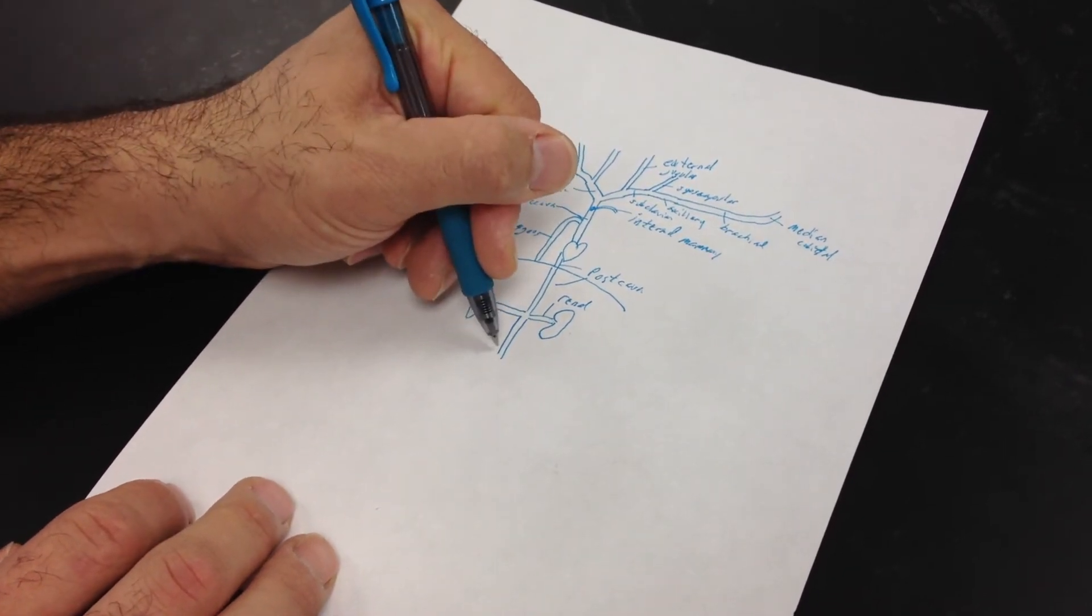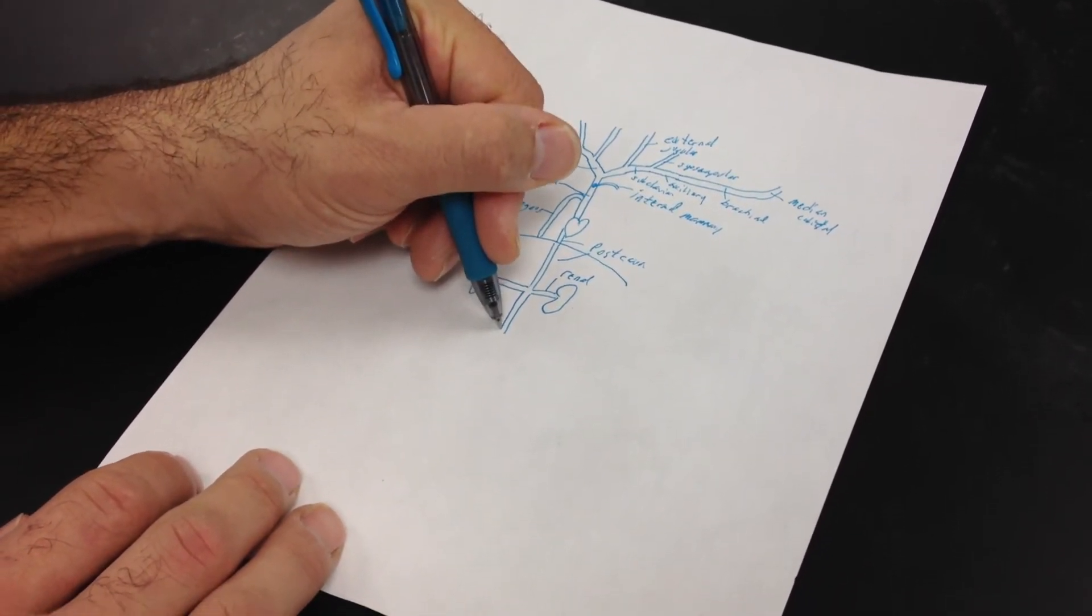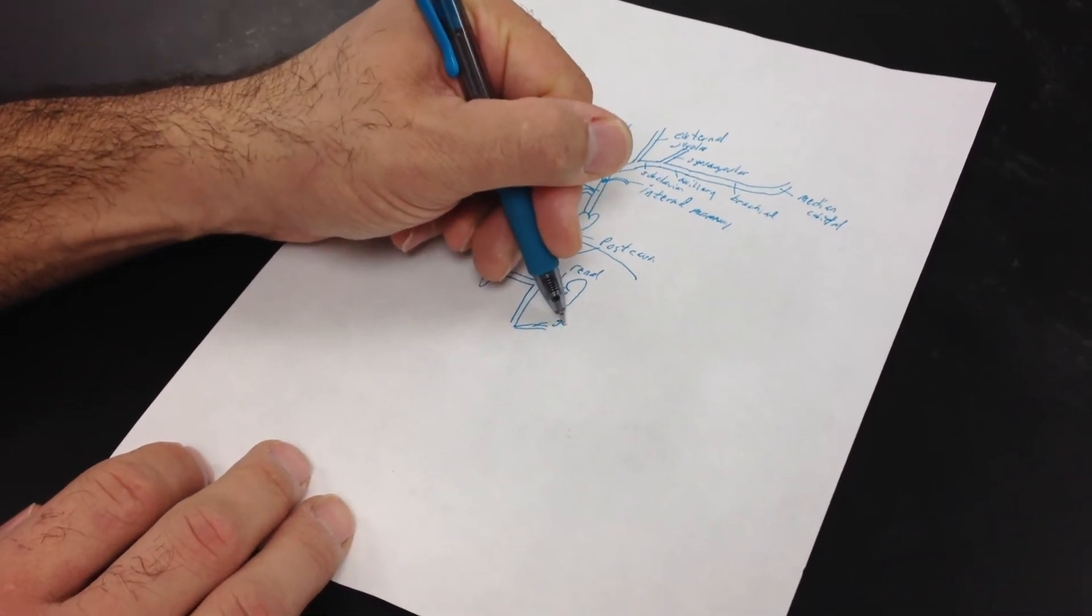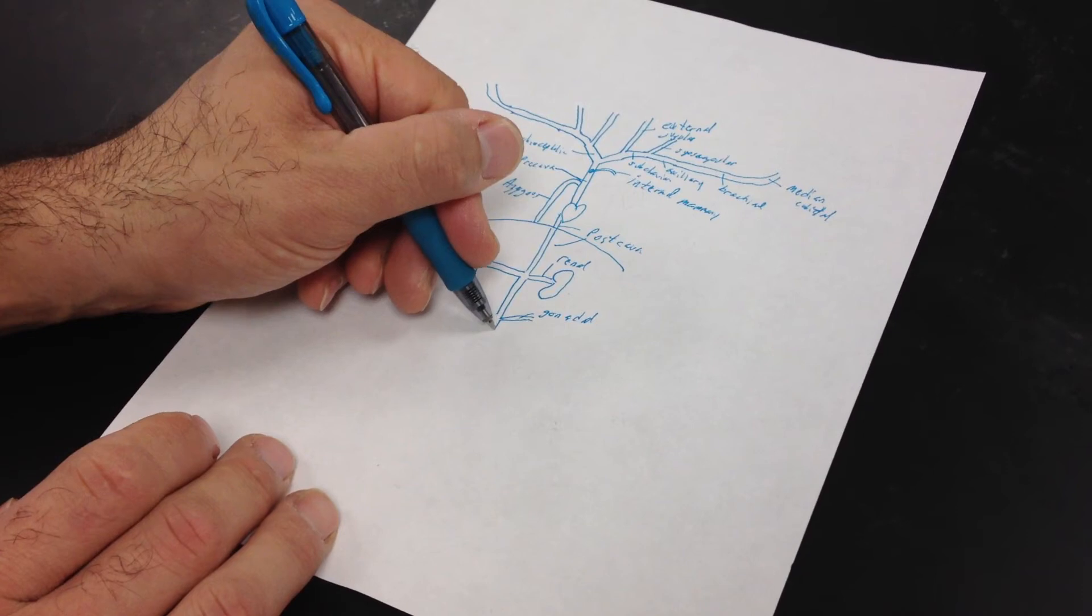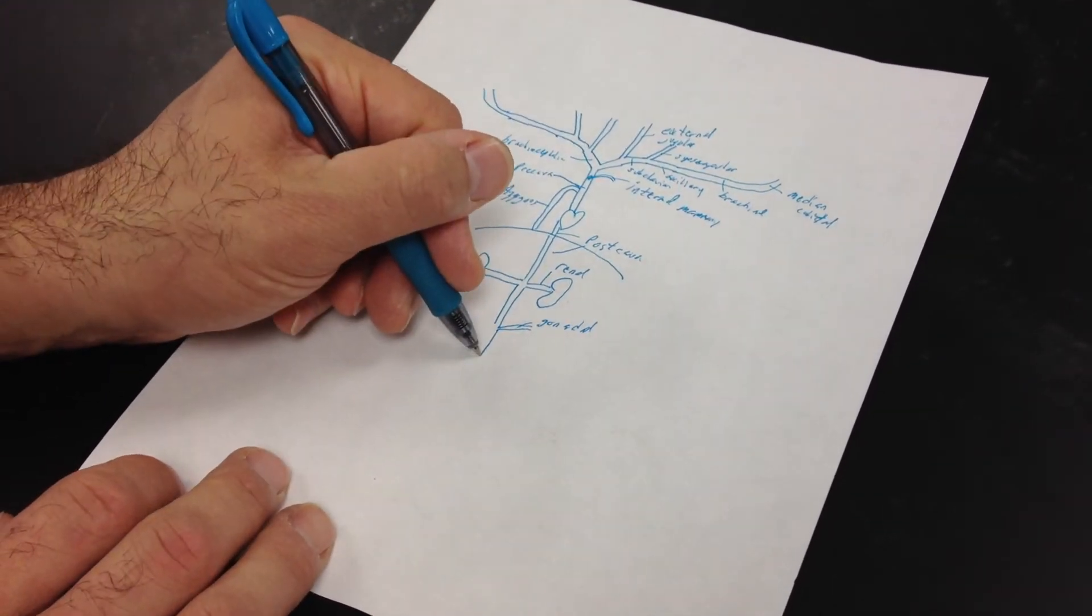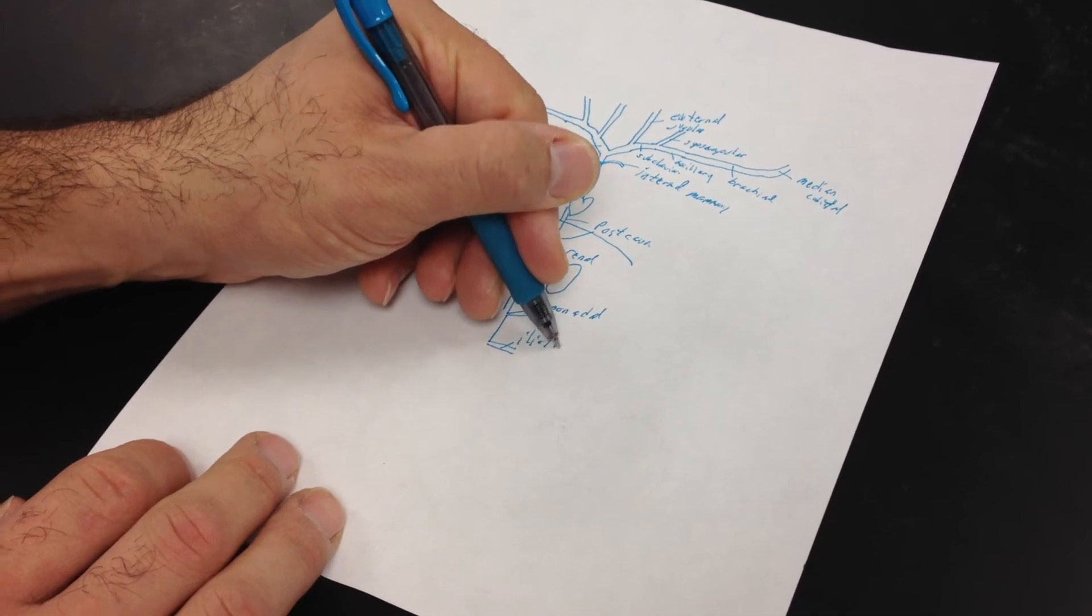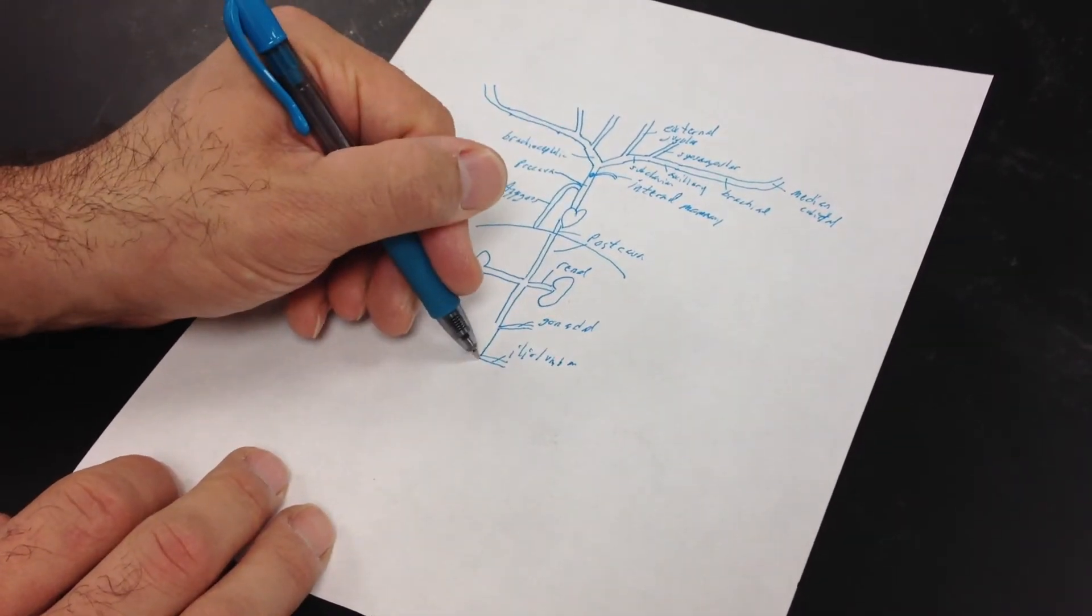And next we have our gonadal vein, which is going off over here somewhere. And it's going to continue down. Then we have our iliolumbar. But those are pretty much the same as the arteries.